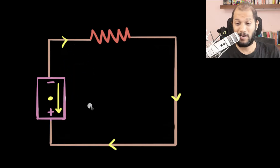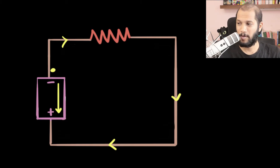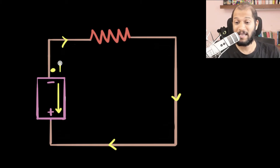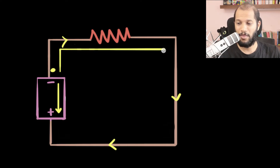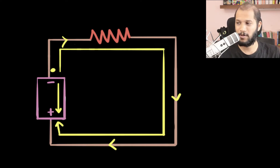And if you consider that same electron outside the battery, the same thing happens. It experiences a push from the negative terminal and a pull from the positive terminal, which means it experiences a push in this direction. So both inside and outside the battery, it gets pulled towards the positive charge.